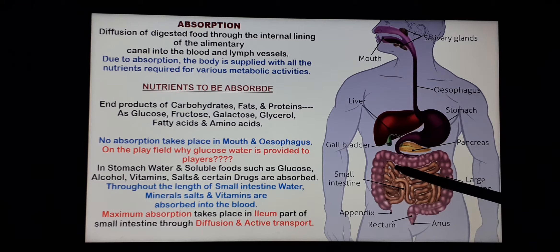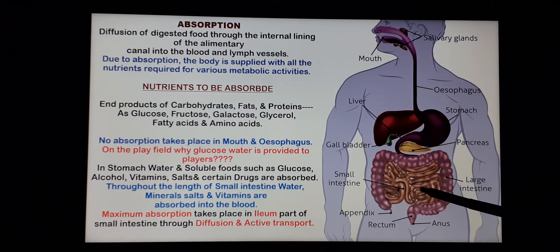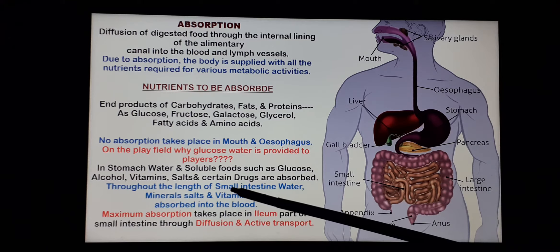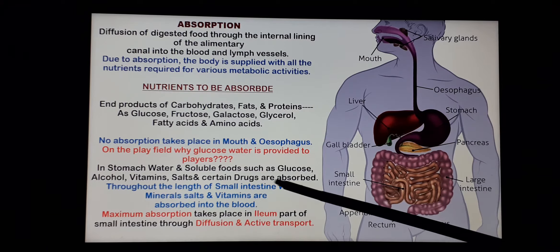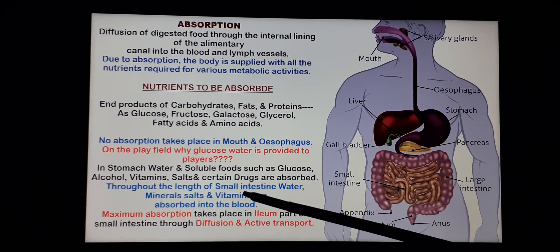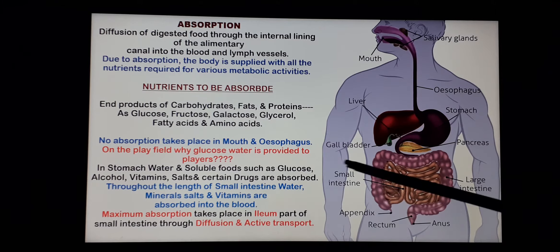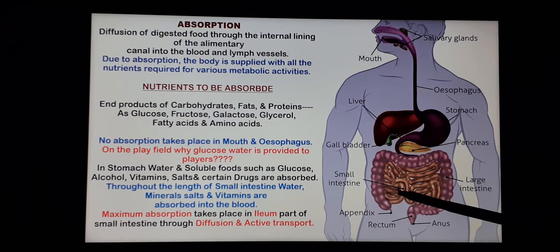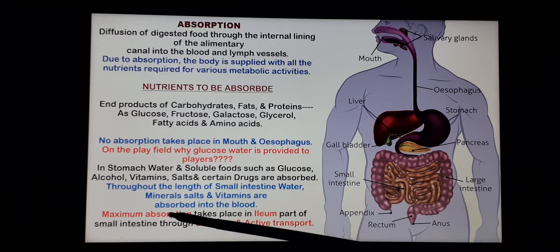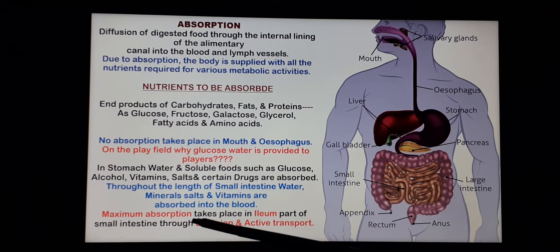In the next part of the alimentary canal — that is duodenum, jejunum and ileum — there is also absorption of water, mineral salts and vitamins. But after the completion of digestion, the last phase, that is ileum, is the part where maximum absorption takes place through active diffusion and active transport.